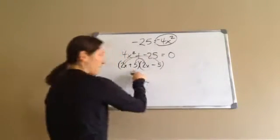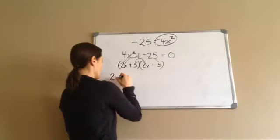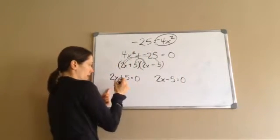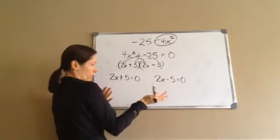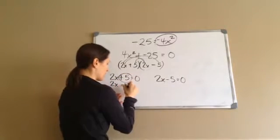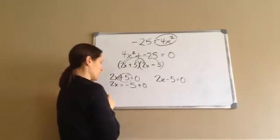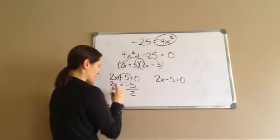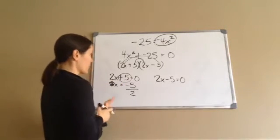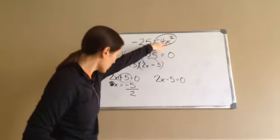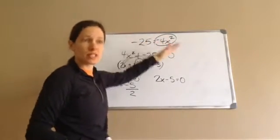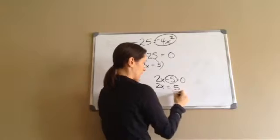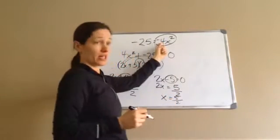We're not done yet. The next step is to set each factor equal to 0. So we say 2x plus 5 equals 0, and then 2x minus 5 equals 0. For the first one: 2x equals negative 5, divide by 2, so x equals negative 5 halves. If you put that back into the original problem it would give you negative 25 equals negative 25. For the second one: 2x equals positive 5, divide by 2, so x equals 5 halves. You'll have two x answers.